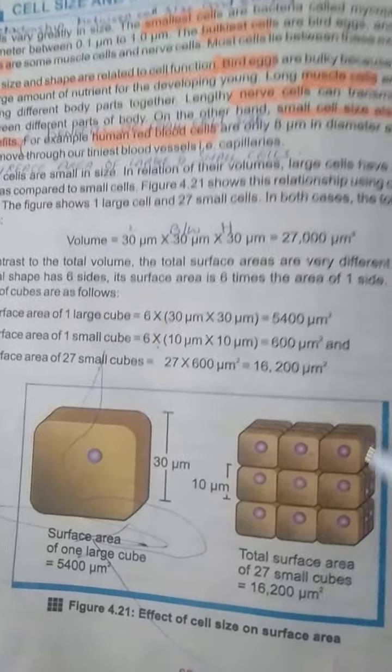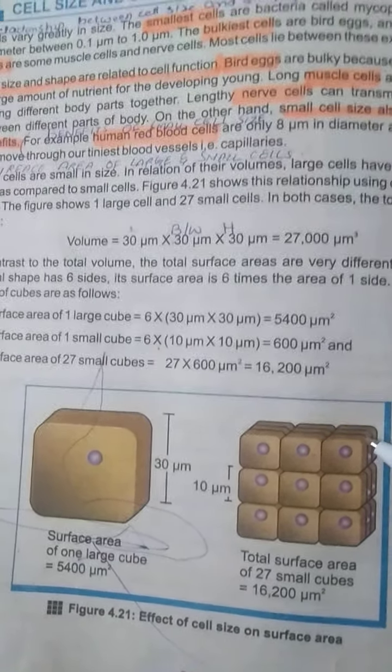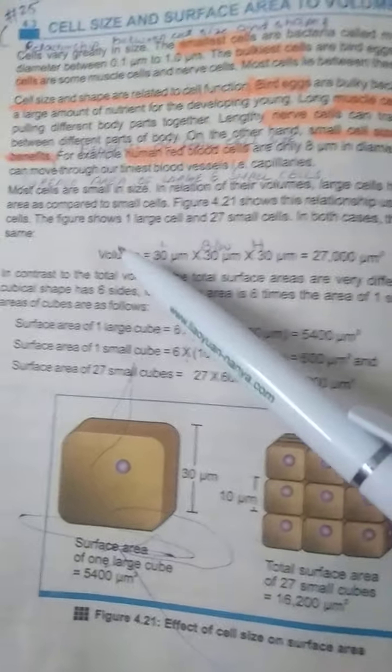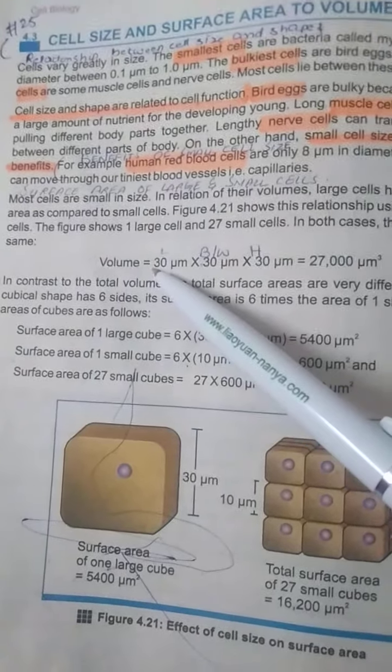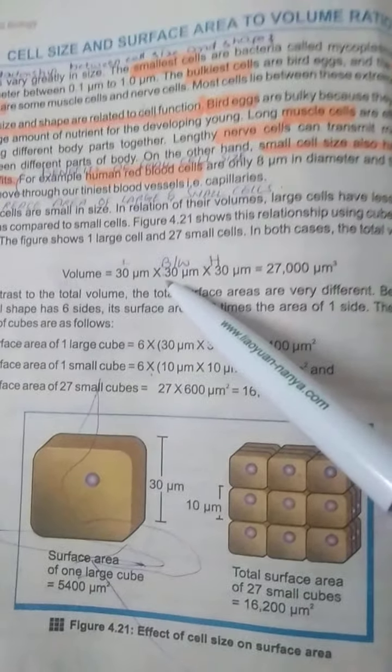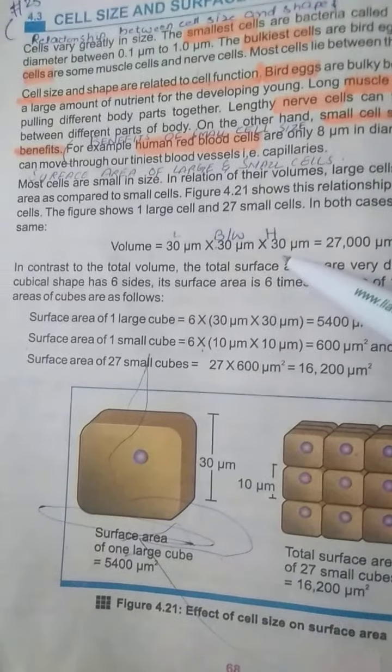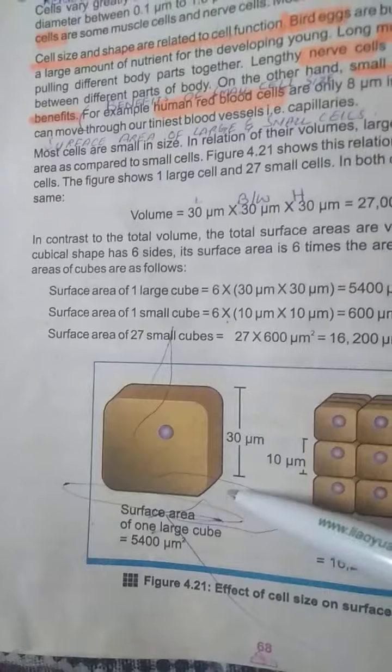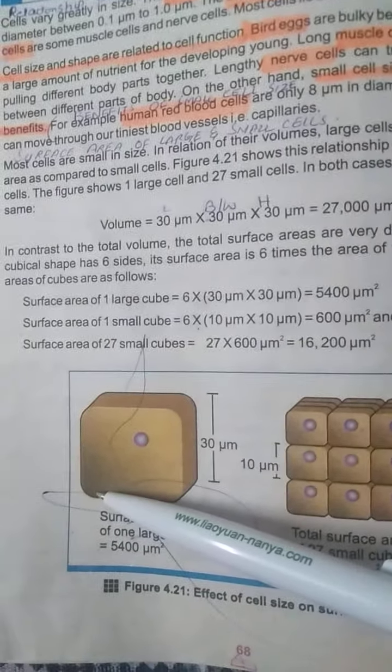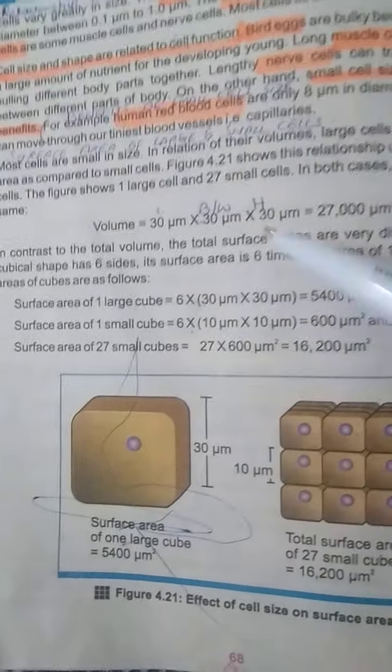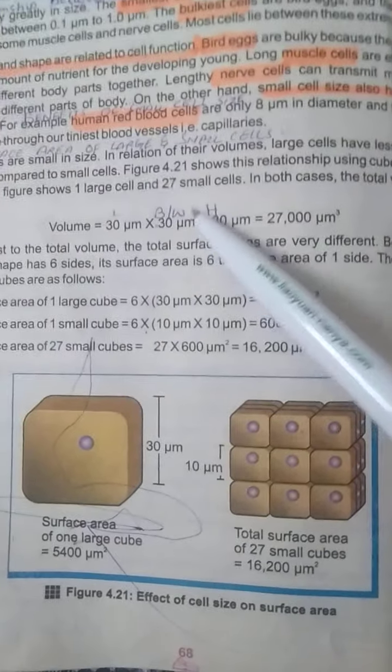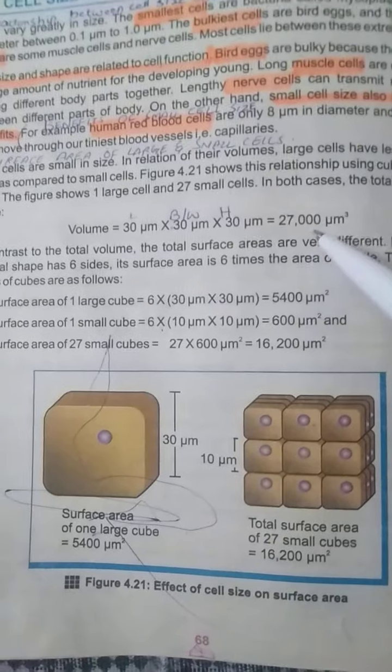Now, you know volume is equal to length into breadth, that is actually called width, and height. If we take one large cell, the measurements are given below. Length is 30 micrometer, width is same 30 micrometer, and height is 30 micrometer. If we take volume of these things, length into width into height, we get the answer 27,000 micrometer cube.